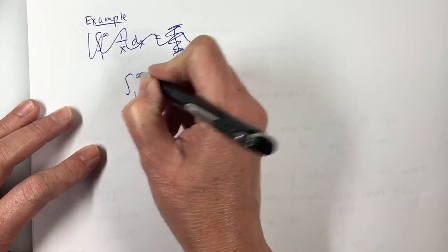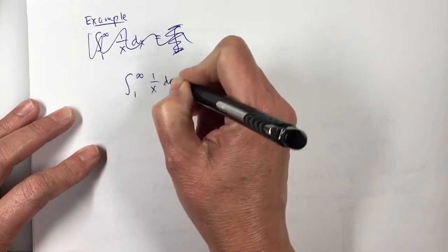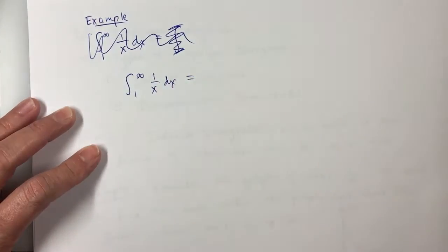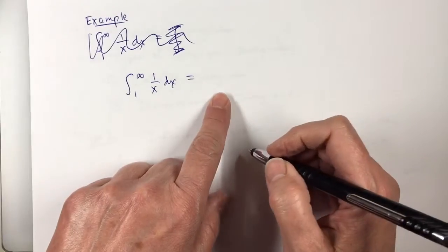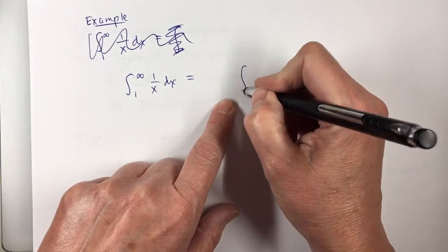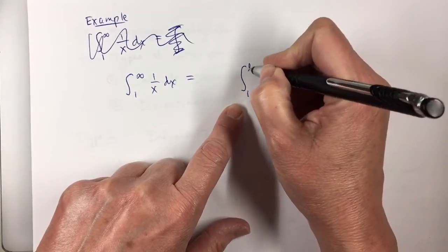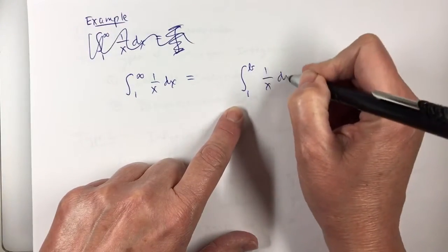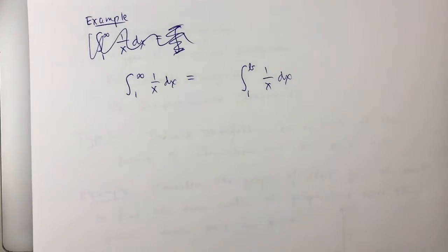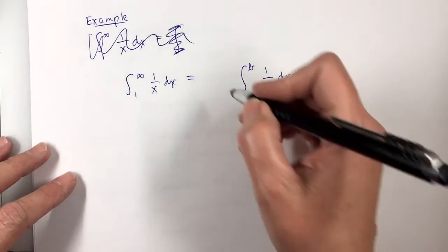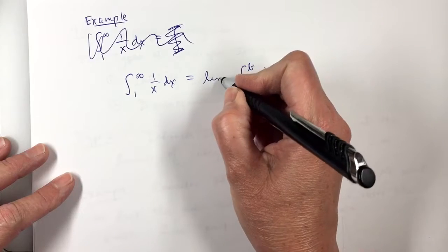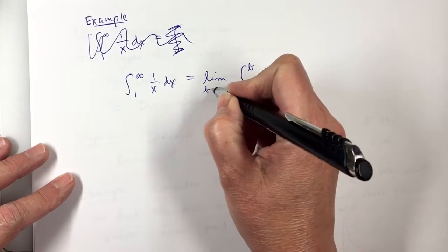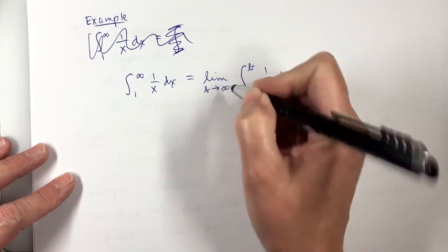So, the integral from 1 to infinity of 1 over x dx equals, I'm going to leave the space this time, the integral from 1 to B, 1 over x dx, where B stands for a number, and I want to do here the limit as B approaches infinity.